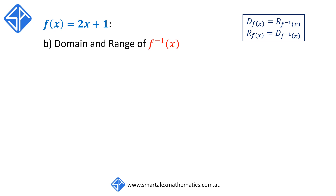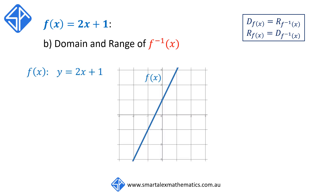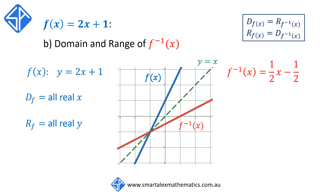For our example, f of x equal to 2x plus 1 is a straight line graph with a domain of all real x and a range of all real y. The inverse, f to the negative 1 of x equal to one half x minus one half, is also a straight line graph, symmetrical to f of x about the line y equals x. The domain of the inverse is all real x and the range is all real y, confirming that the domain of f equals the range of the inverse, and the range of f equals the domain of the inverse.